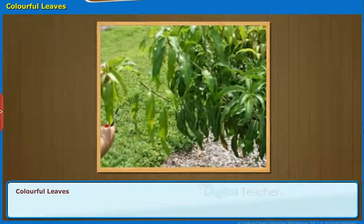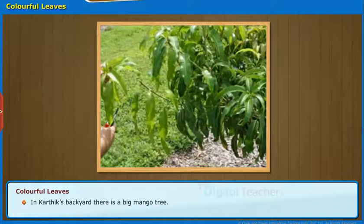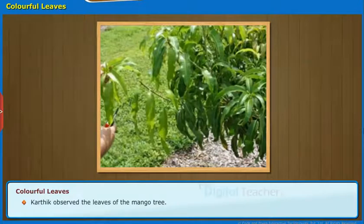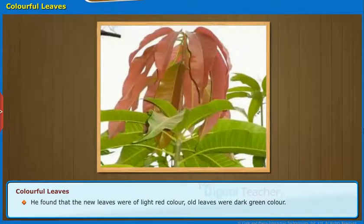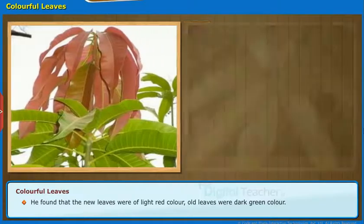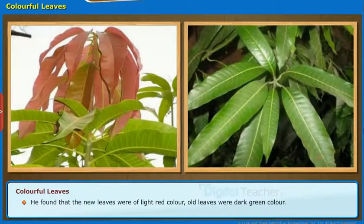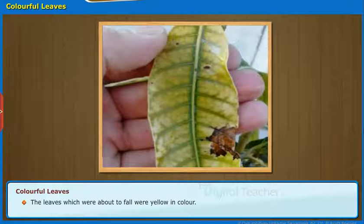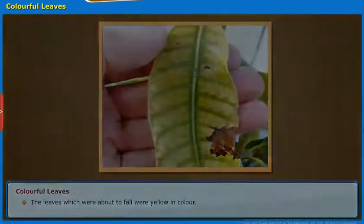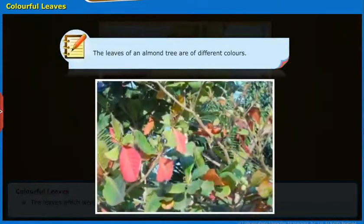Now, let us study when the leaves change their color. In Karthik's backyard, there is a big mango tree. Karthik observed the leaves of the mango tree. He found that the new leaves were of light red color, old leaves were dark green in color, and the leaves which were about to fall were yellow in color. Make a note: the leaves of an almond tree are of different colors.